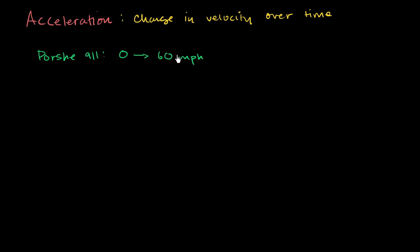They'll say a Porsche 911 can go from zero to 60 miles per hour — and these aren't the exact numbers although I think it's probably pretty close — zero to 60 miles per hour in let's say three seconds. Sweet. Seriously?